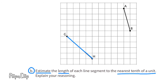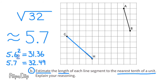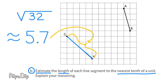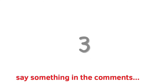For line segment GH, we found the length is the square root of 32. Its estimated length to the nearest tenth is approximately 5.7 units, because 5.6 squared is 31.36 and 5.7 squared equals 32.49. Since 32.49 is closer to 32, the estimated length of this line segment to the nearest tenth of a unit is 5.7 units.